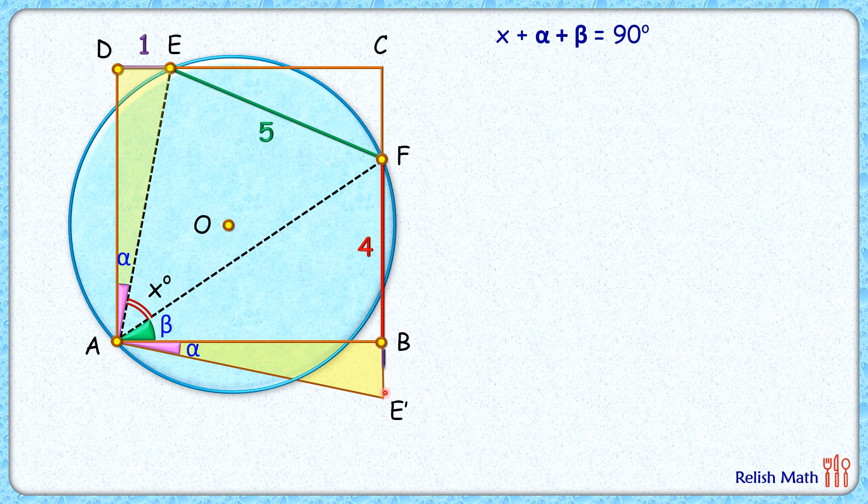BE' is 1 centimeter, same as DE, as these yellow triangles are congruent. If EA length is 'b' centimeters, then AE' length will also be 'b' centimeters. Now if we consider this pink triangle and this green triangle...